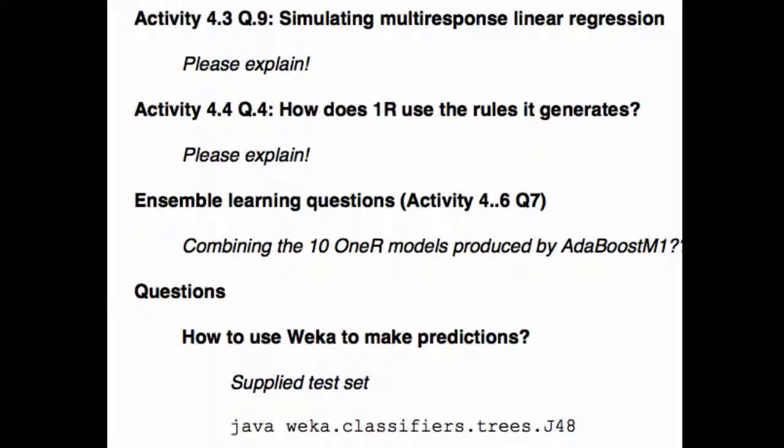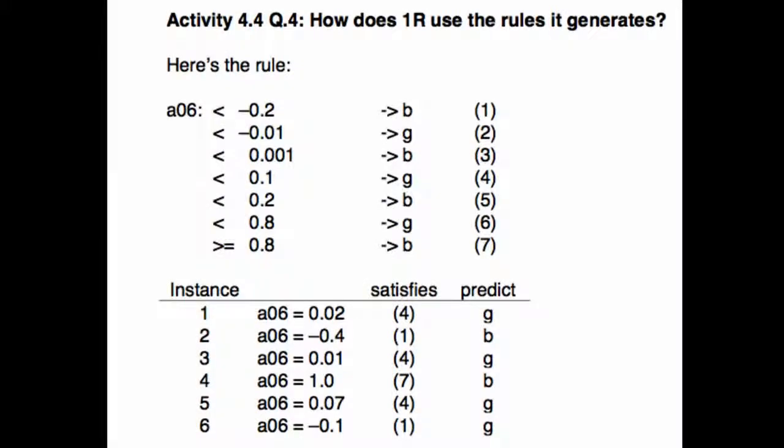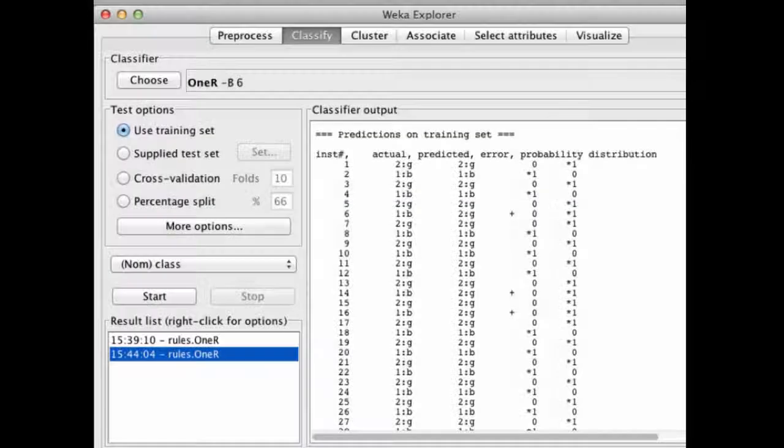How does 1R use the rules it generates? Please explain. Well, here's the rule generated by 1R. It ends it on attribute 6. Of course, if you click the Edit button in the preprocess panel, you can get to see the value of this attribute for each instance. Let's see if I've got it. Yes. So, this is what we see in the Explorer when we run 1R. And you can see the actual and predicted, you can see the predicted instances here. These are the predicted instances. G, B, G, B, G, G. So, these are the predictions.